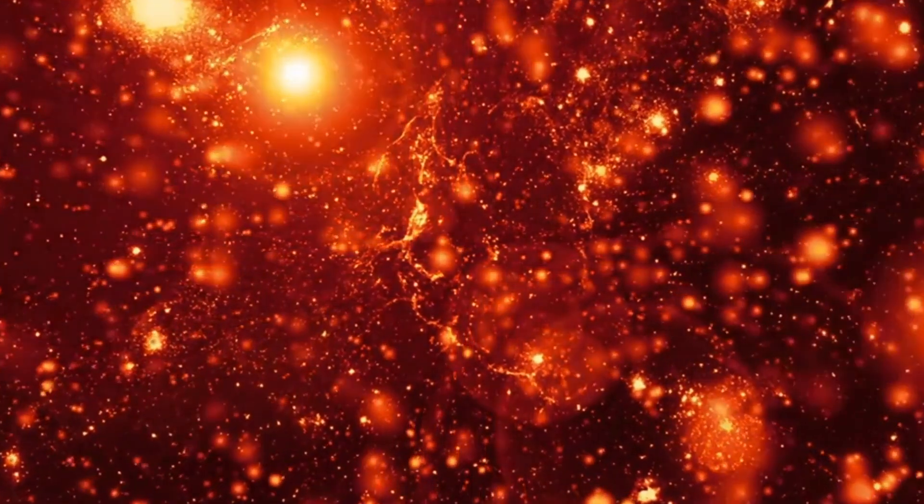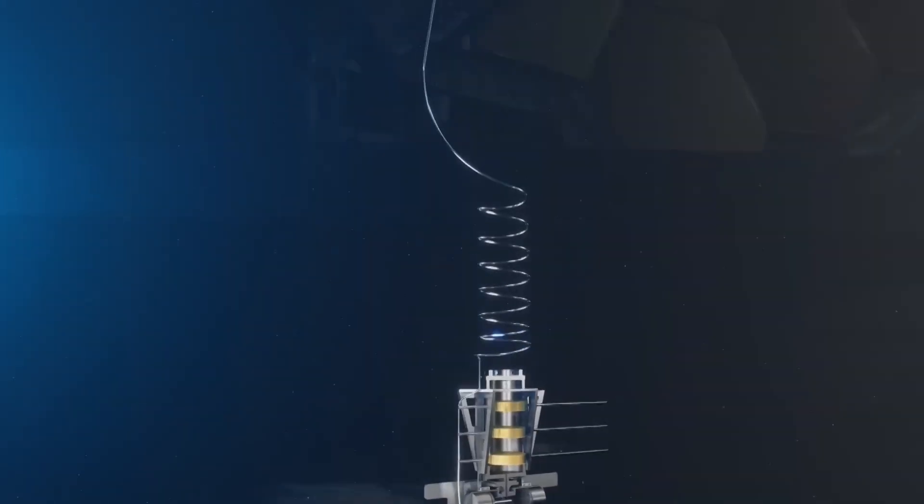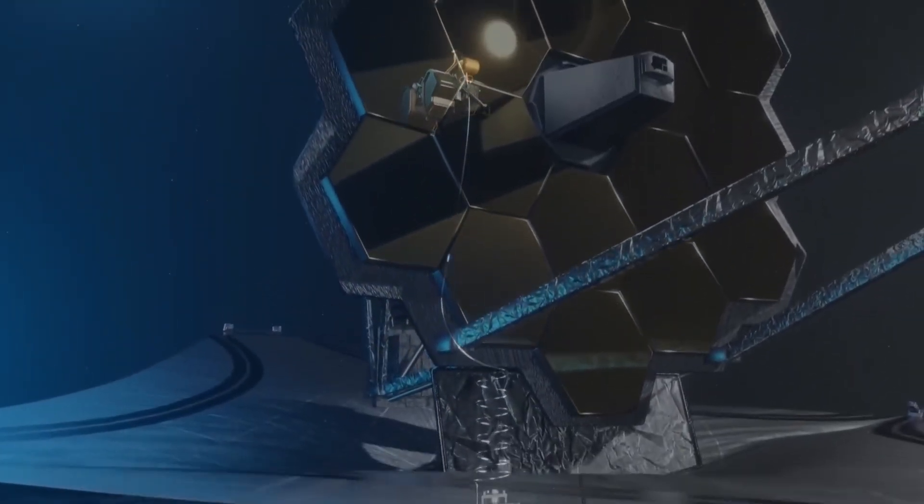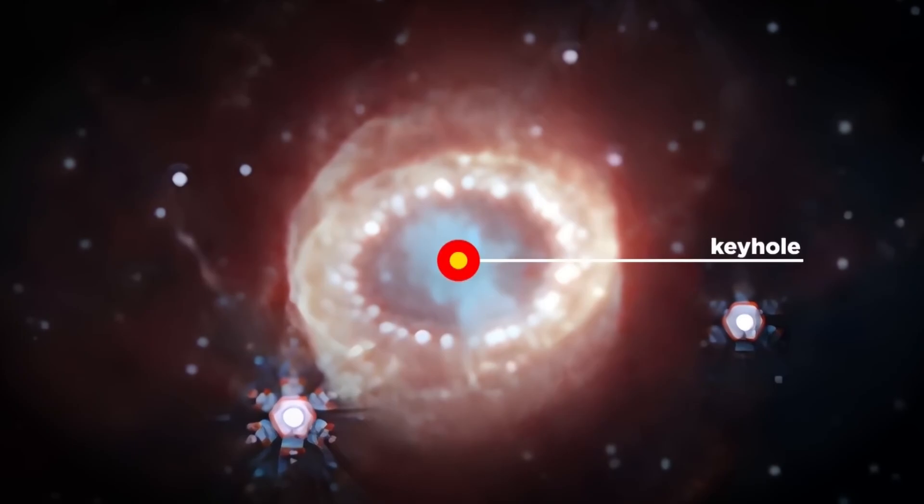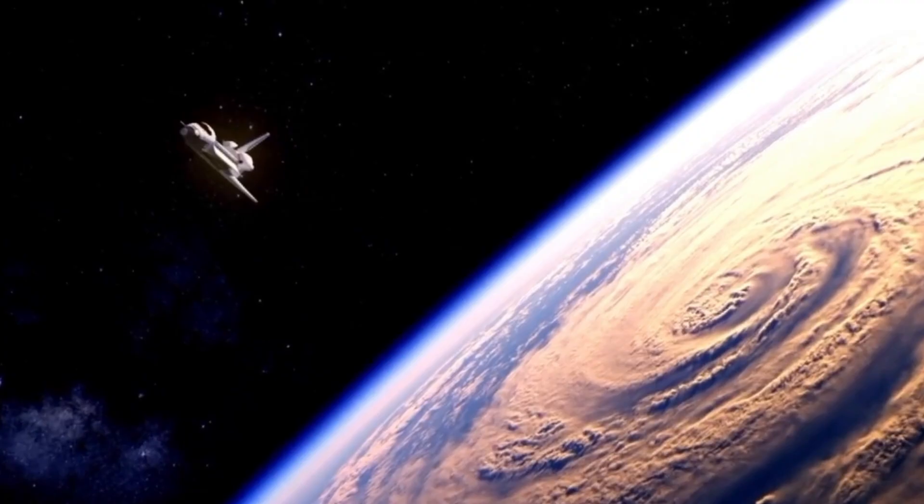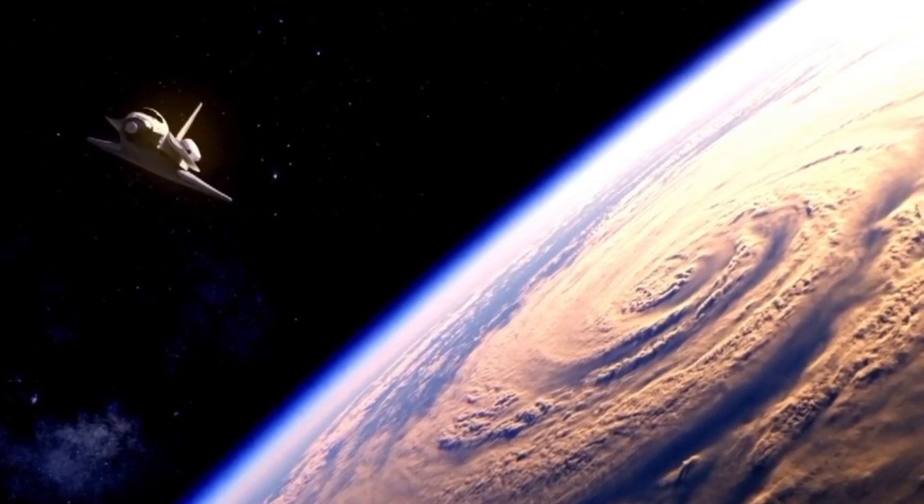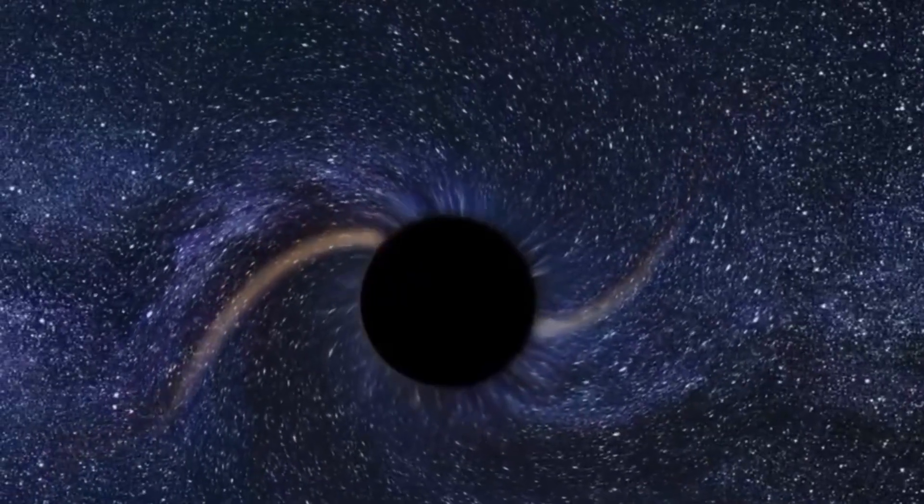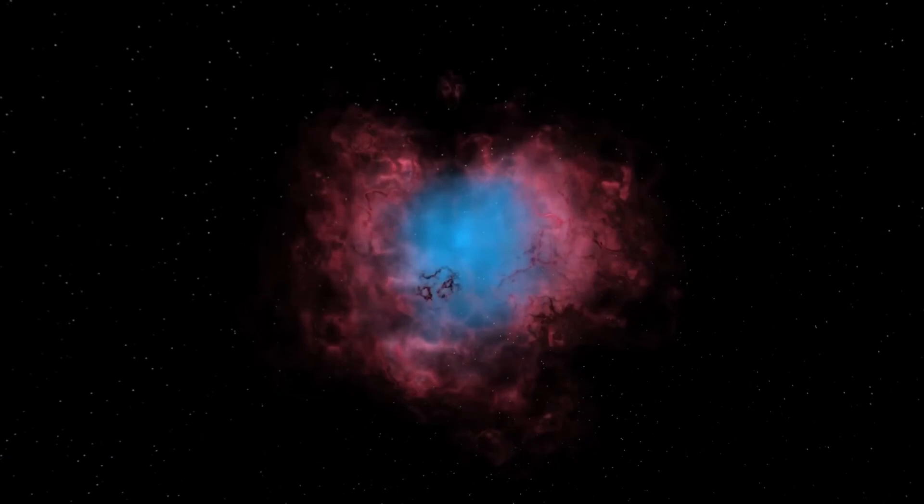One popular theory suggested the presence of dust clouds in front of the star, obscuring its light and causing the dimming effect. As stars like Betelgeuse age, they often shed their outer layers, releasing vast amounts of dust and gas into space. This material can form dense clouds that can sometimes block the star's light, leading to perceived dimming from our vantage point.